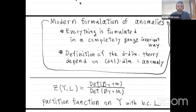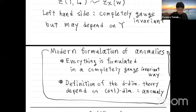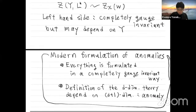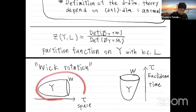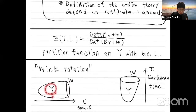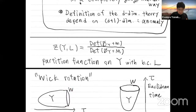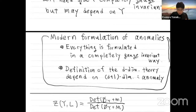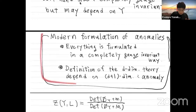Yesterday I talked about the construction of chiral fermions as a boundary mode. I considered a d-dimensional manifold W and a d+1-dimensional manifold Y. On Y we put a massive fermion, and if we take the mass parameter to be negative in the bulk, then we can obtain chiral fermions on the boundary. In that way we can realize chiral fermions.